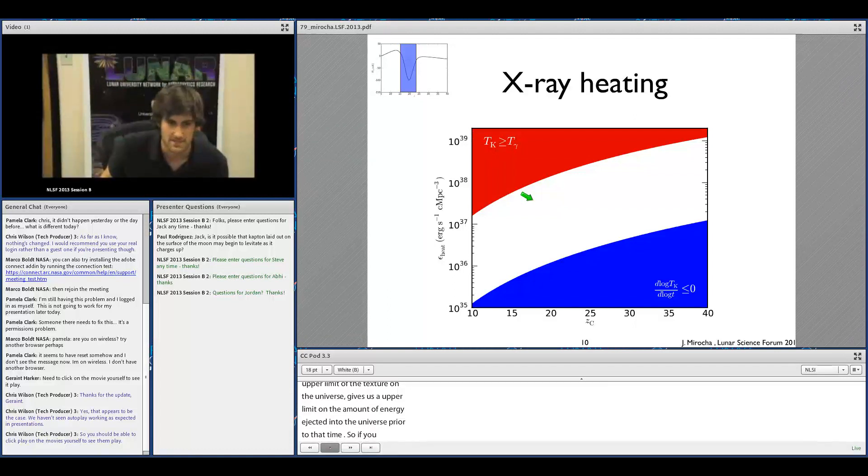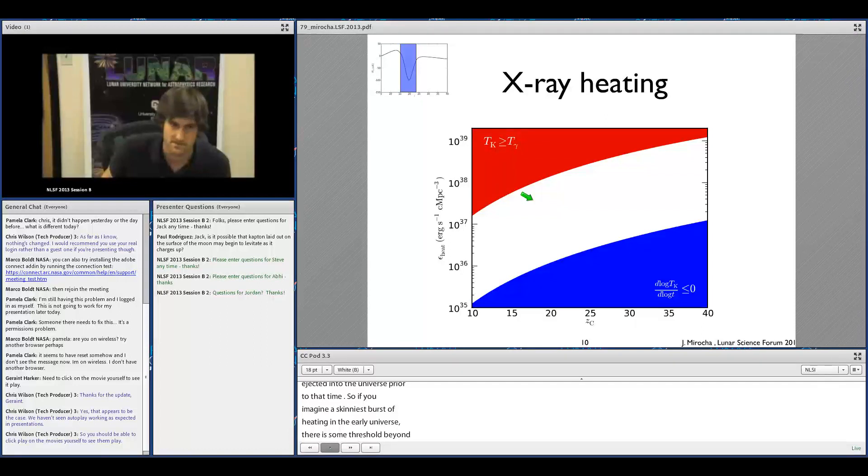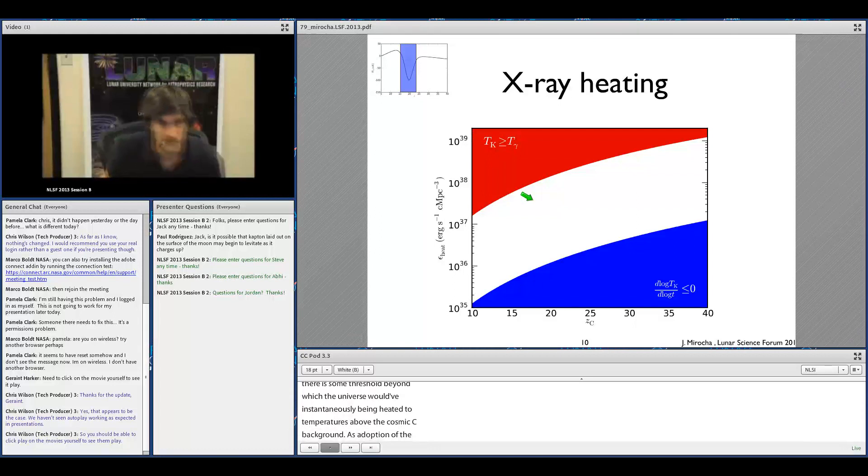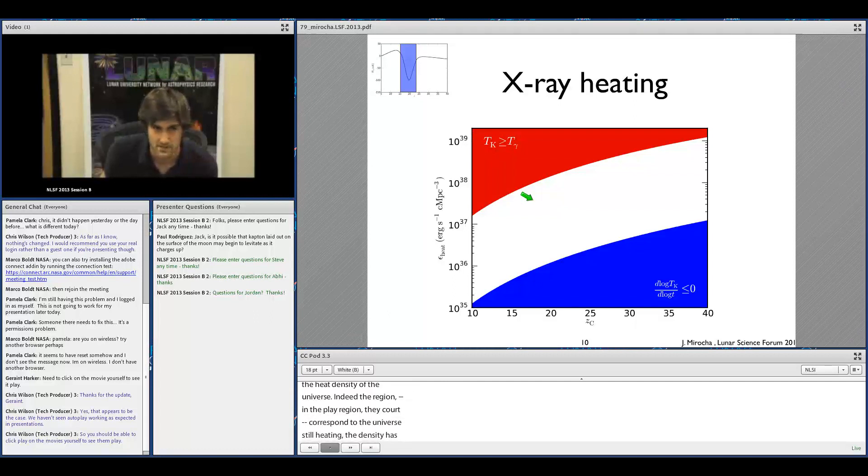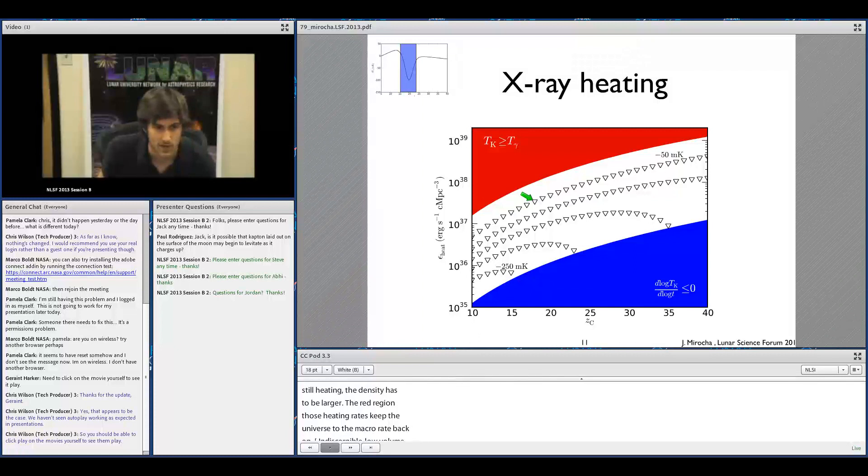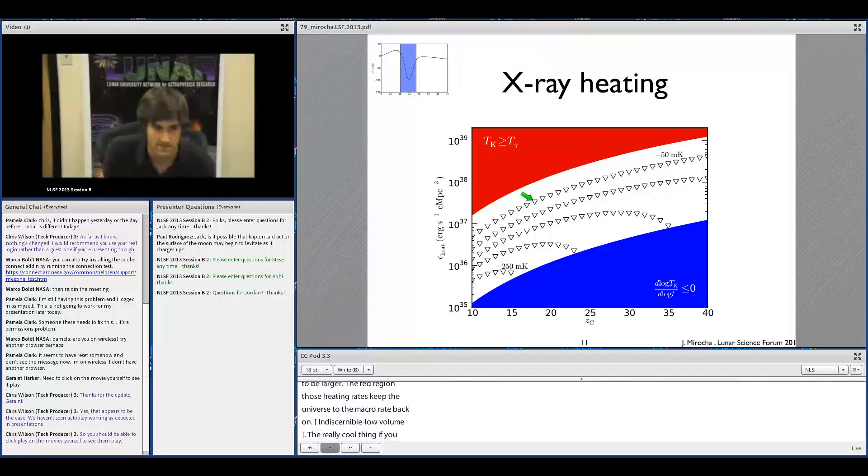If you imagine an instantaneous burst of heating in the early universe, there's some threshold beyond which the universe would have instantaneously been heated to temperatures above the cosmic microwave background. As a function of the position of turning point C in this plot, we can come up with a range of acceptable values for the heating rate density of the universe. In the blue region, these heating rate densities correspond to the universe that's still cooling. So if we see turning point C at all, the heating rate density has to be larger than those values. In the red region, those heating rates would have instantaneously heated the universe to temperatures higher than the microwave background. So if we see an absorption signal at all, we can rule those out.